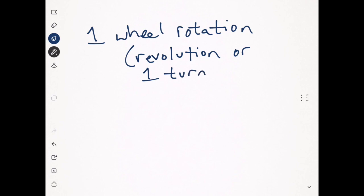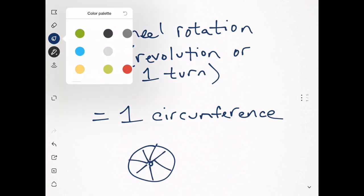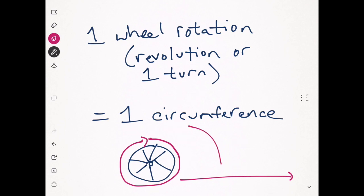Hello mathematicians, welcome back. What we just learned from that demonstration is the big idea today, and that is: one wheel rotation, also sometimes called a revolution or one turn, is equal to one circumference. In other words, when the wheel spins around one time, the distance that it travels is one circumference. Let's look at a few examples.